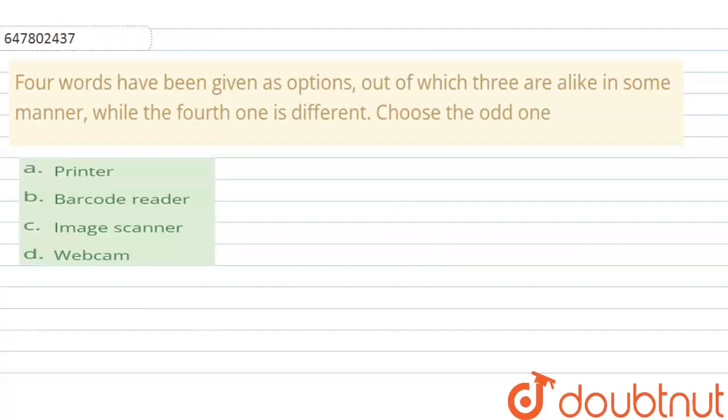Hello everyone, let's solve this question. In the question, there are four words given as options, out of which three are alike in some manner while the fourth one is different. Choose the odd one.